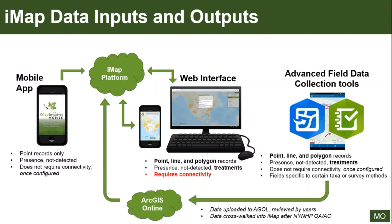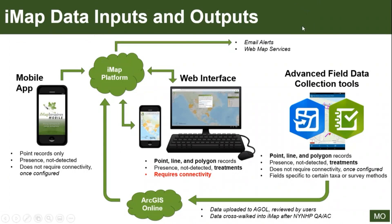We recognize that some of our partners are doing more complex surveys out in the field, so we've developed a couple of advanced field data collection tools. These tools are hosted within Esri apps and allow you to collect more advanced data — points, lines, polygons, treatment records, and specific fields for certain types of surveys like rake tosses. They allow for that sort of advanced data collection even when you're not connected to the Internet. Regardless of how the data gets into IMAP Invasives, it's all considered IMAP data, so it will generate email alerts and be available in the web map services.